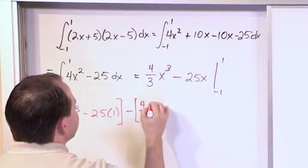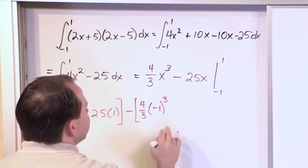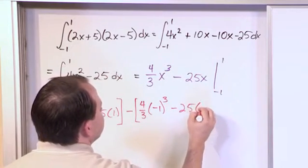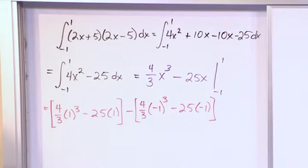So here we have 4 thirds evaluating the bottom limit of integration, like this, and then 25 times negative 1. So lots and lots of writing, but writing that pays off.